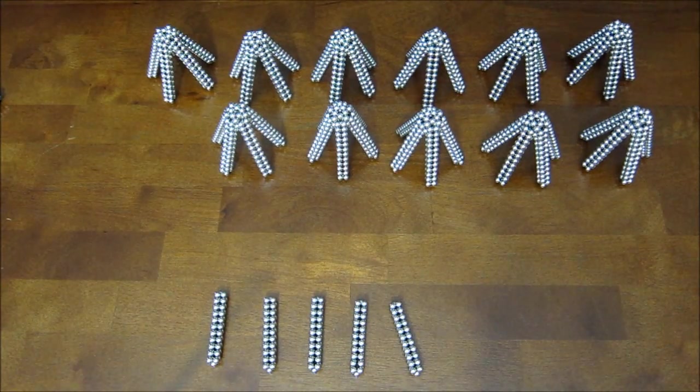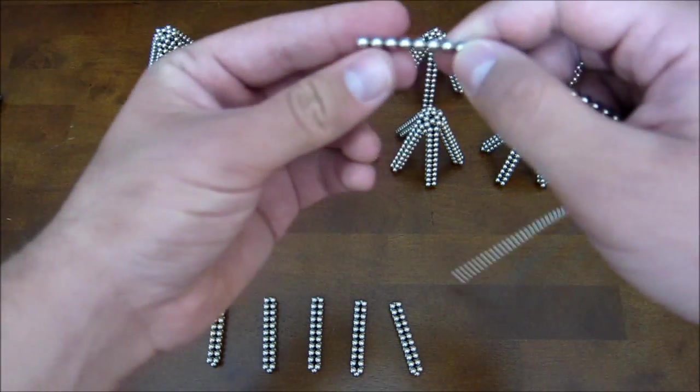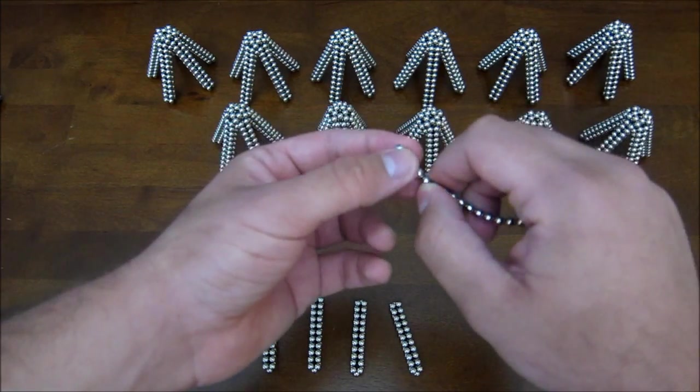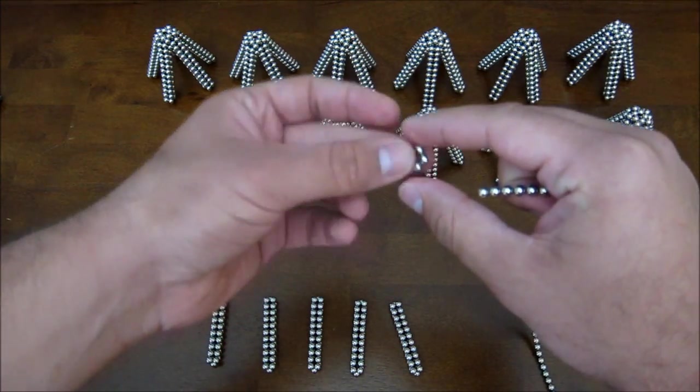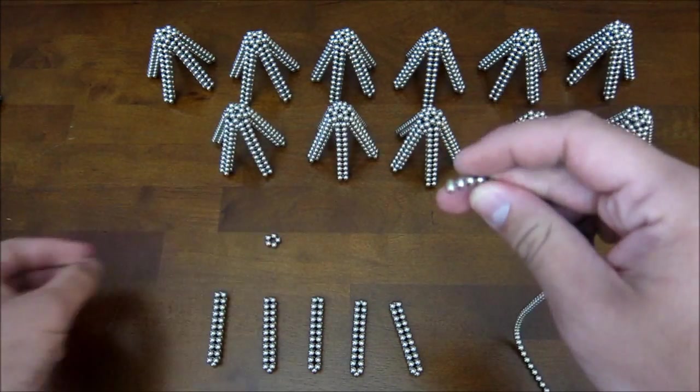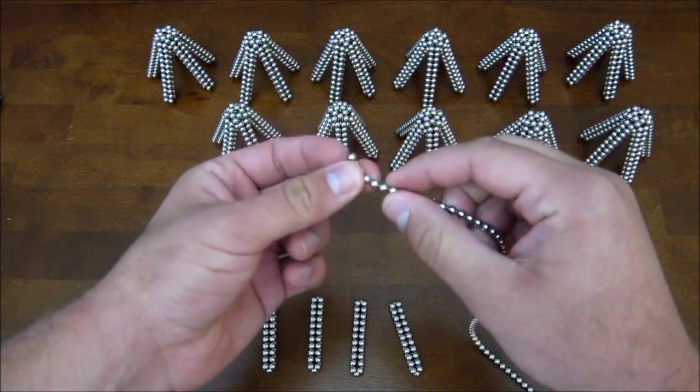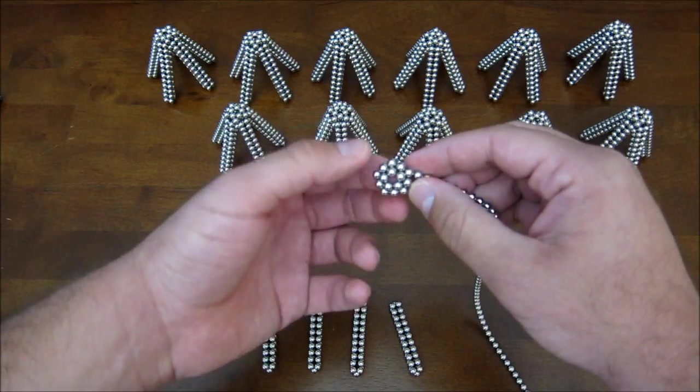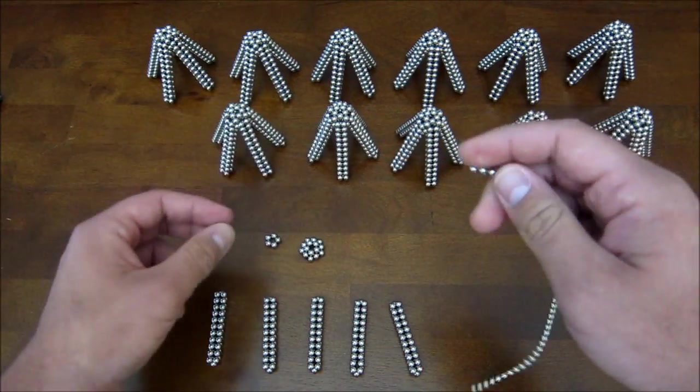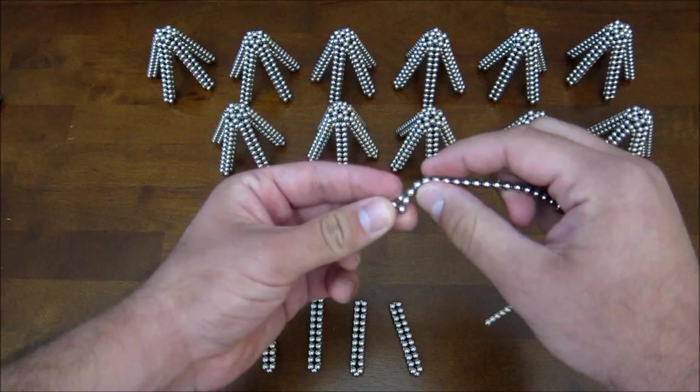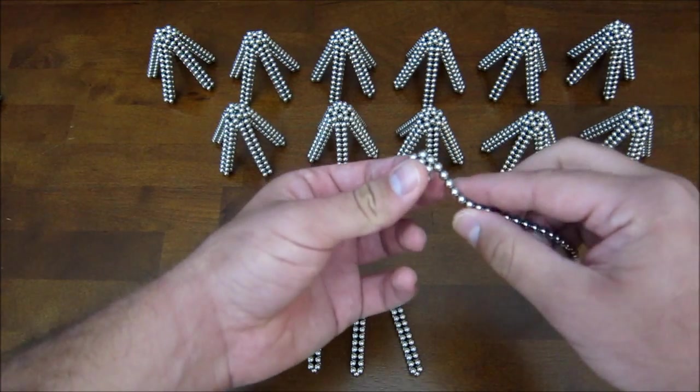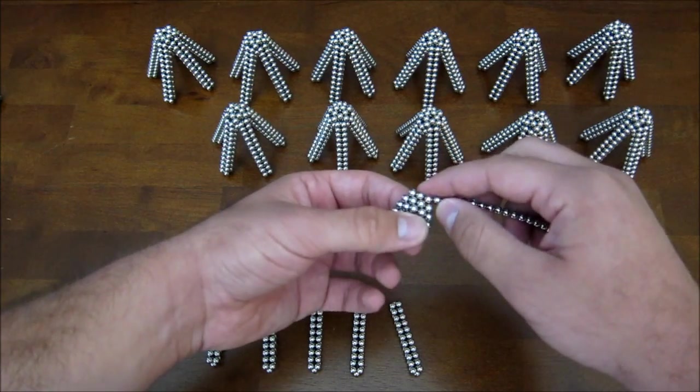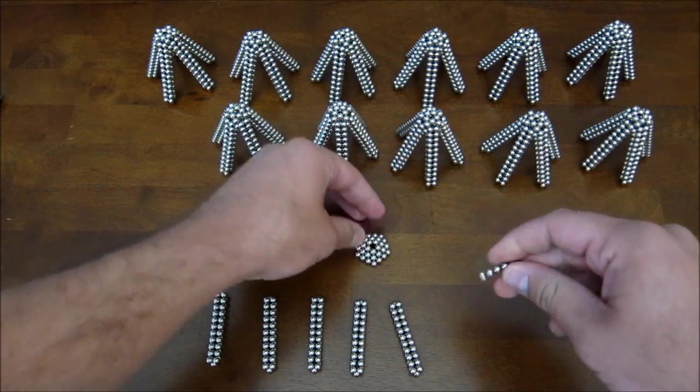So then you also need a pentagonal bipyramid, or a decahedron, a small one. You make it by first making a small pentagon ring like that. Then you make a slightly larger pentagon, and then you make one more pentagon that's larger still, just like that.